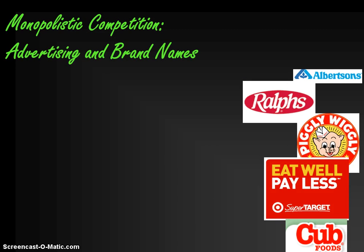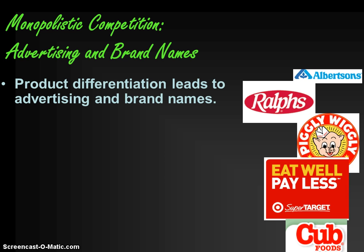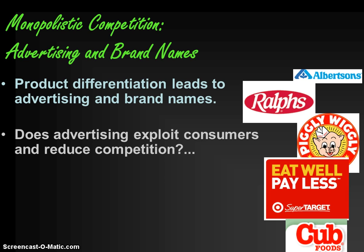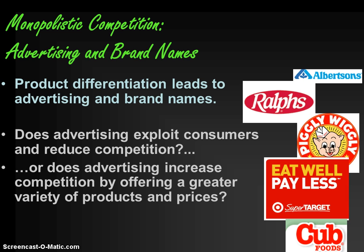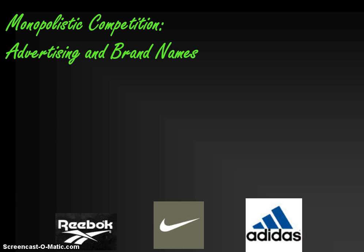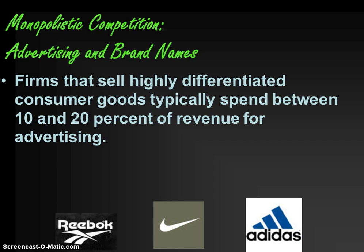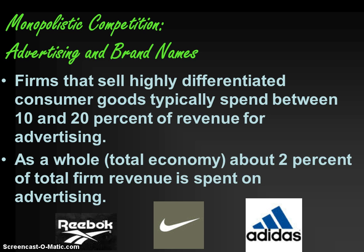Another important piece in imperfect market structures is advertising, which is one of the largest forms of non-price competition. Advertising isn't free — it costs firms a lot of money. Product differentiation leads to advertising and brand names; when you promote your product, people recognize it from commercials and ads. There's a debate about advertising: does it exploit consumers and reduce competition because people gravitate toward recognized brands, or does it increase competition by offering a greater variety of products and prices? As a whole, the economy spends about 2% of total firm revenue on advertising.